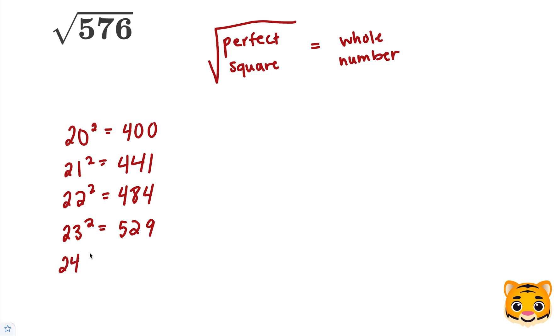And then 24 squared gives us 576. So this means that 24 times 24 is 576. When we take the square root of 576, we end up getting 24. This is our simplified answer.